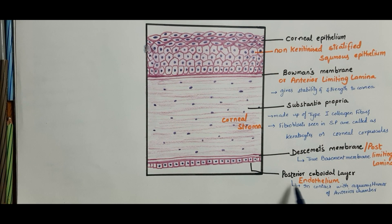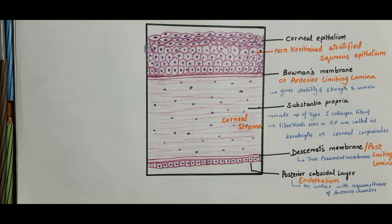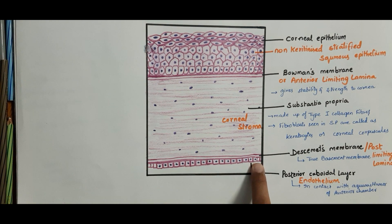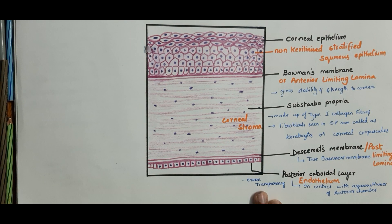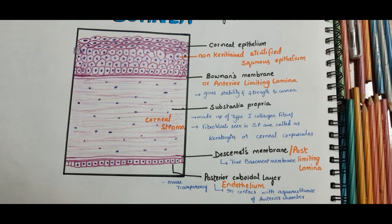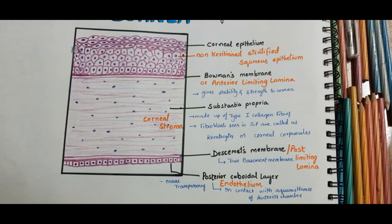The endothelial cells help in transfer of ions and possess numerous mitochondria. They are united to neighboring cells by desmosomes, and these cells pump out the extra fluid from the cornea, thereby maintaining its transparency.